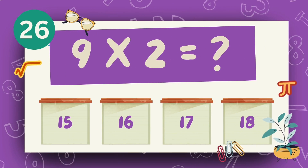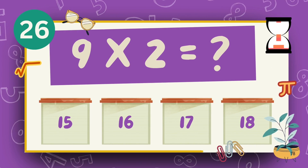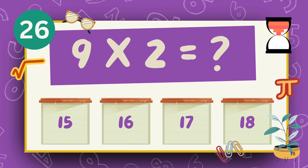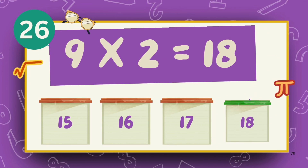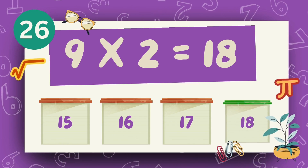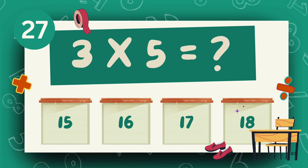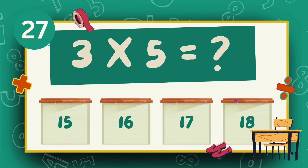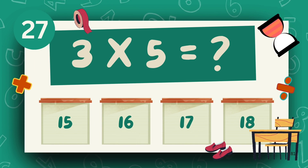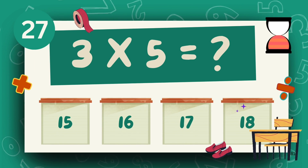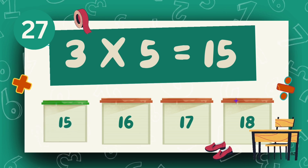What is 9 multiply 2? The answer is 18. The answer is 15.